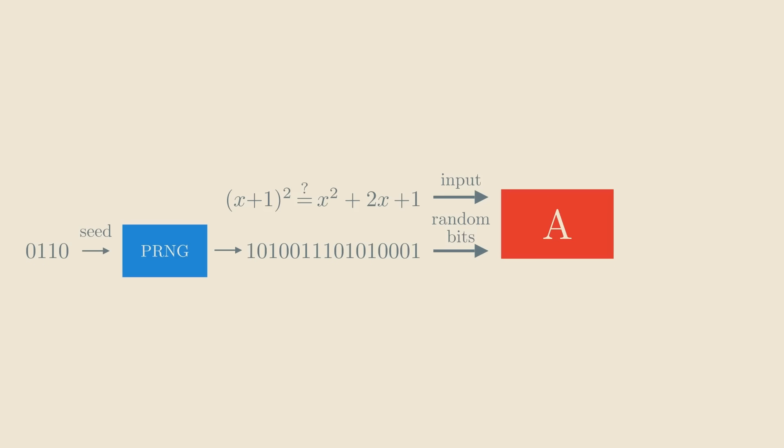Our next goal is to prove that A behaves similarly if we run it with pseudorandom bits rather than truly random ones. Remember, if the two expressions do correspond to the same polynomial, then it doesn't matter whether we use truly random or pseudorandom bits. We could even use the all-zero string. The algorithm just plugs a certain number into the two expressions, arrives at two identical results, and then correctly answers that these are the same polynomial.